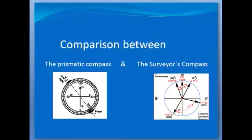In prismatic compass, the graduations are marked on the ring in clockwise direction with 0 to 360 degrees at the south end of the needle, so that 90 is marked at the west, 180 is marked at north, and 270 is at east, as shown in the figure.